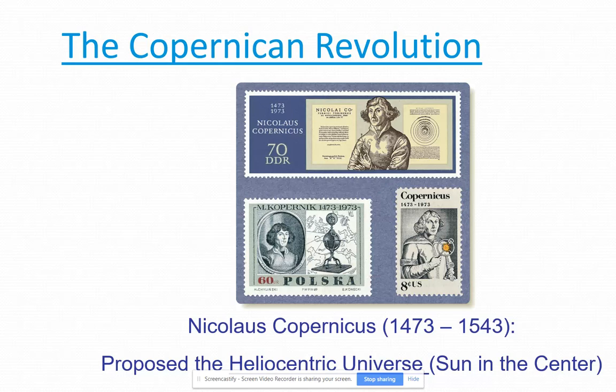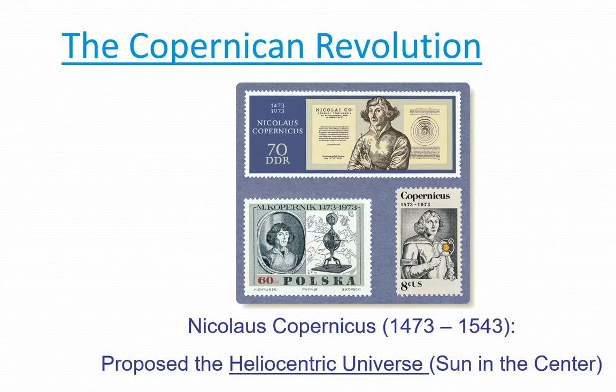Now we're talking about the advent of modern astronomy. Last class period we talked about some ancient astronomy: how Aristotle believed we had the crystalline sphere — the celestial sphere with all the stars on it — and inside that were concentric spheres with the planets.